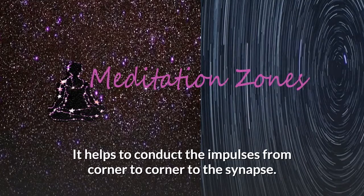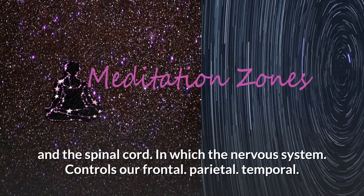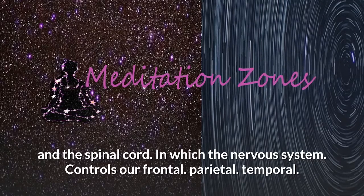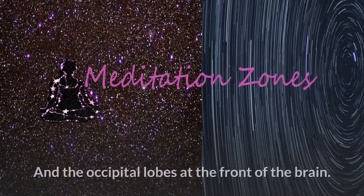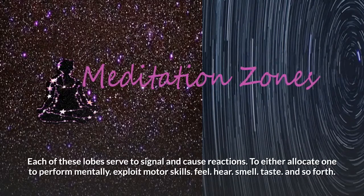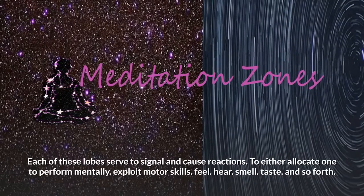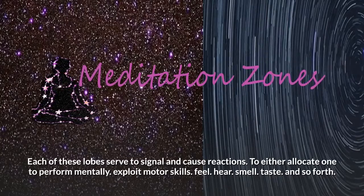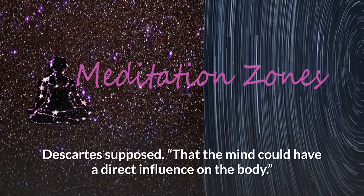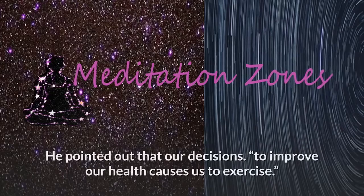These transmitters help conduct impulses from corner to corner through the synapse. The CNS — central nervous system — links to the brain and spinal cord, and the nervous system controls our frontal, parietal, temporal, and occipital lobes at the front of the brain. Each of these lobes serves to signal and cause reactions that allow one to perform mentally, exploit motor skills, feel, hear, smell, taste, and so forth.